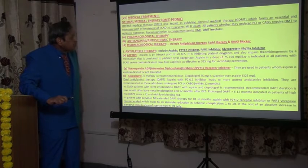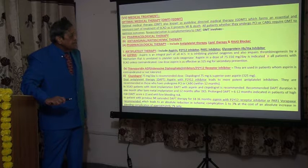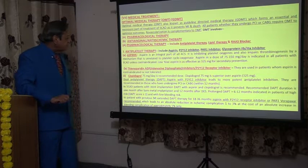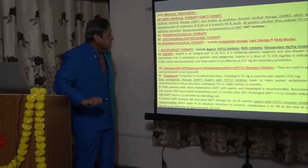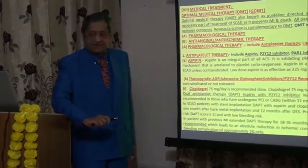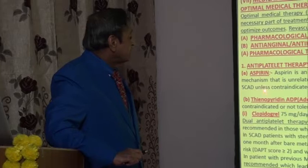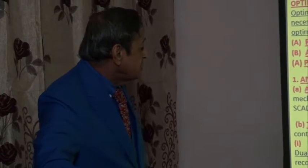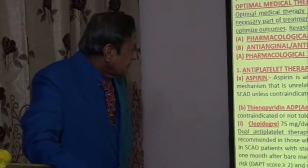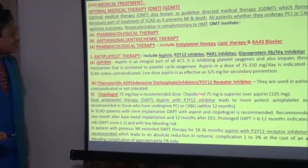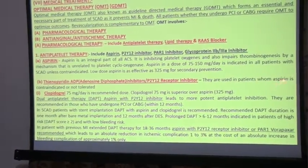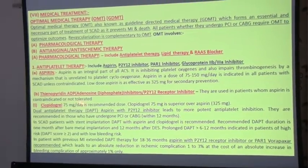Aspirin in a dose of 75 to 250 mg per day is indicated in all patients with SCAD unless contraindicated. Low-dose aspirin is as effective as 325 mg for secondary prevention. P2Y12 receptor inhibitors — thienopyridine, adenosine diphosphate inhibitors — are used in patients in whom aspirin is contraindicated or not tolerated.